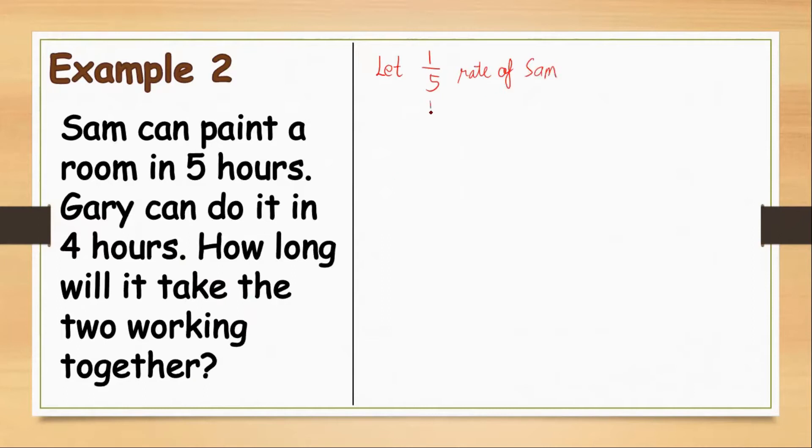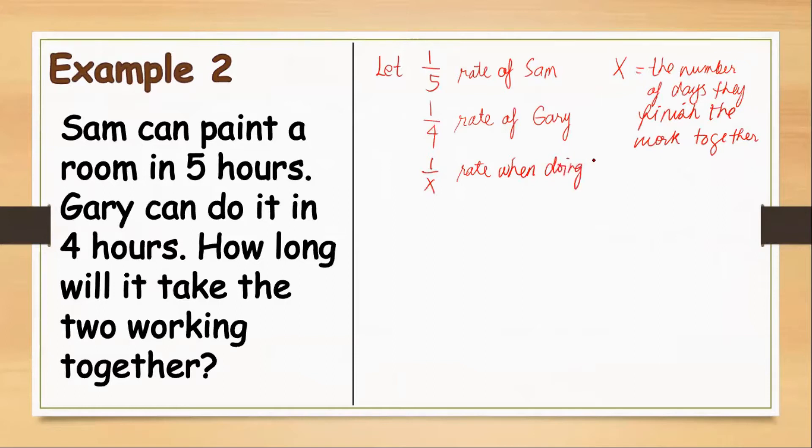And let 1 fourth will be the rate of Gary. Also, let X be the number of days they finish their work together. And so, let 1 over X be their rate when doing together.